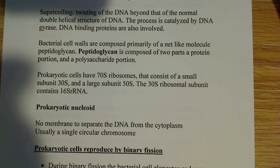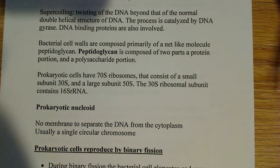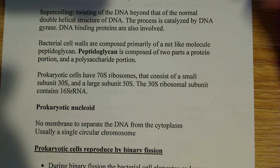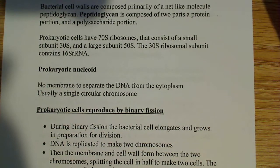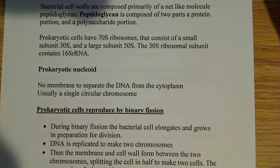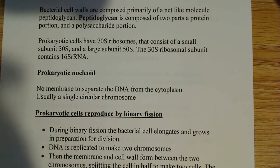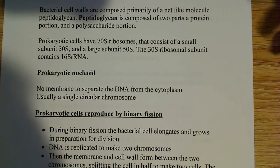Bacterial cell walls are composed of an interesting net-like molecule known as peptidoglycan. Peptidoglycan is composed of two parts: a protein component and a polysaccharide component. Also, prokaryotic cells have a 70S ribosome consisting of a small 30S subunit and a large 50S subunit. The 30S subunit contains 16S ribosomal RNA. The key difference is this 70S ribosome versus our 80S ribosome.